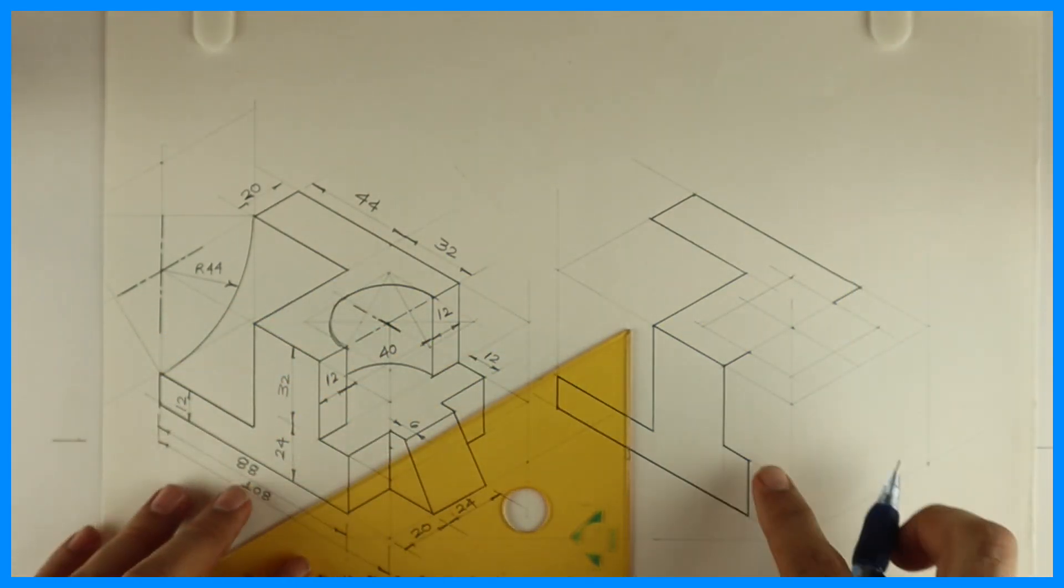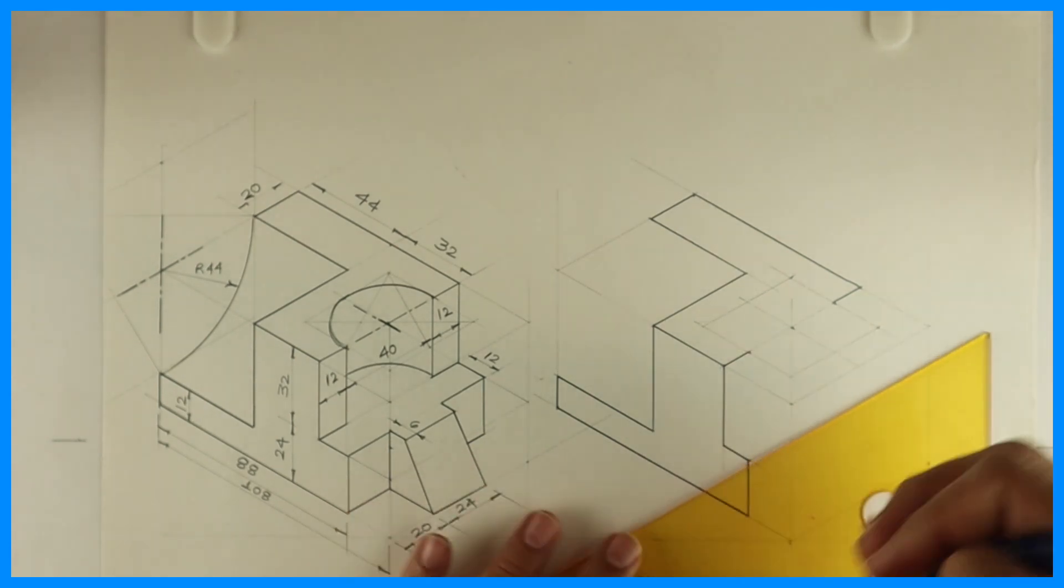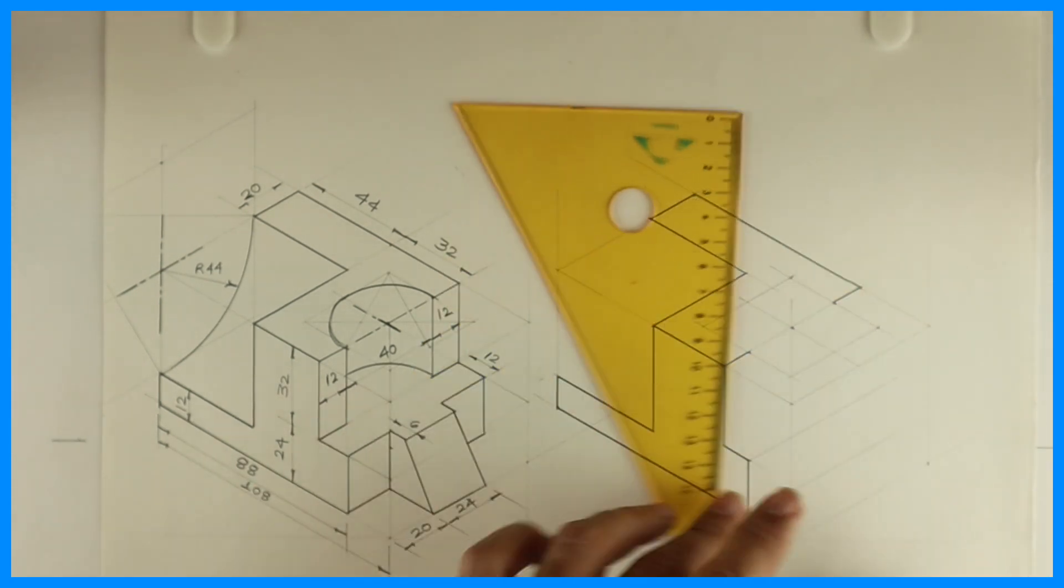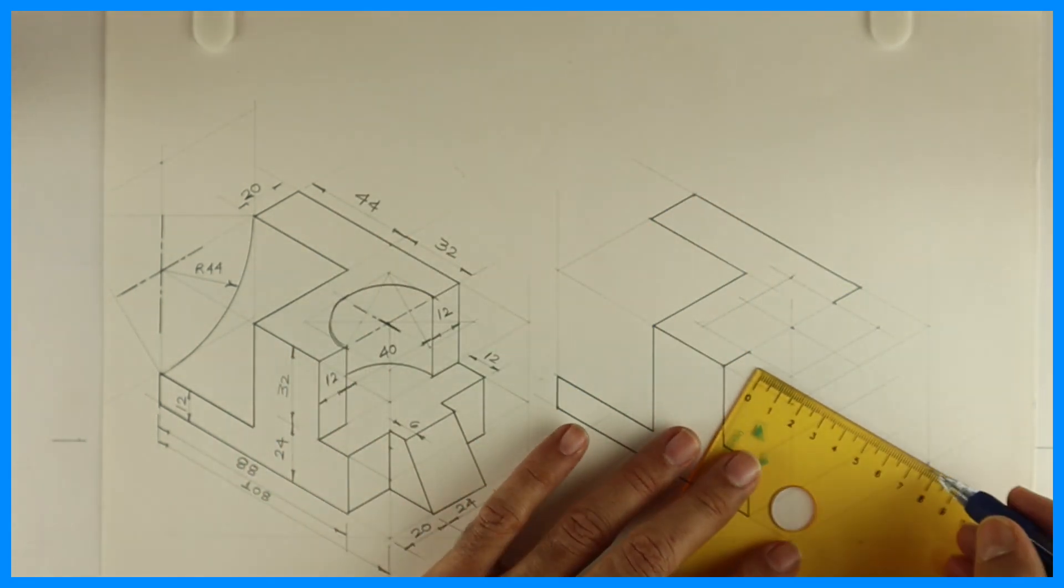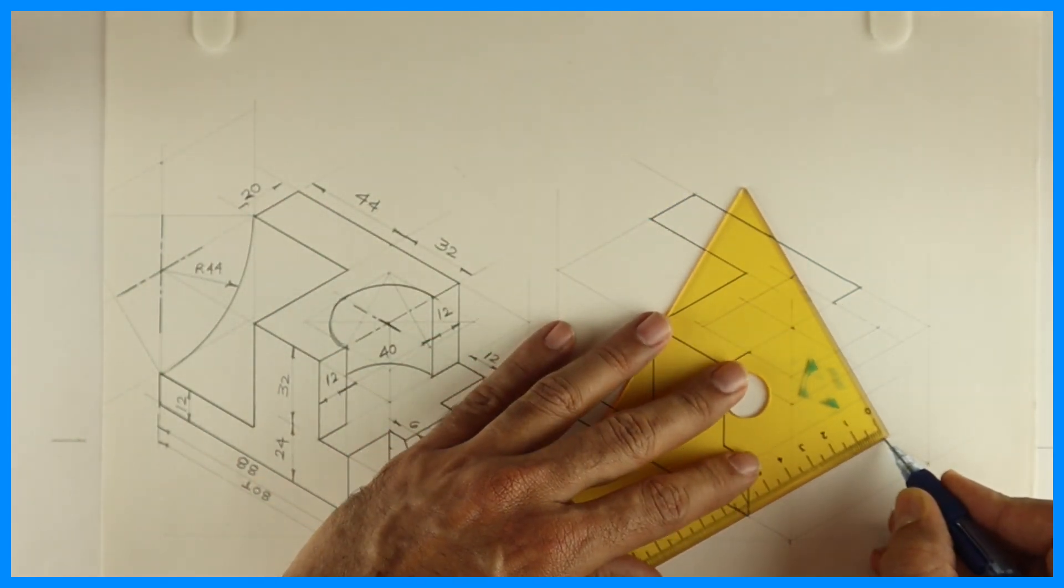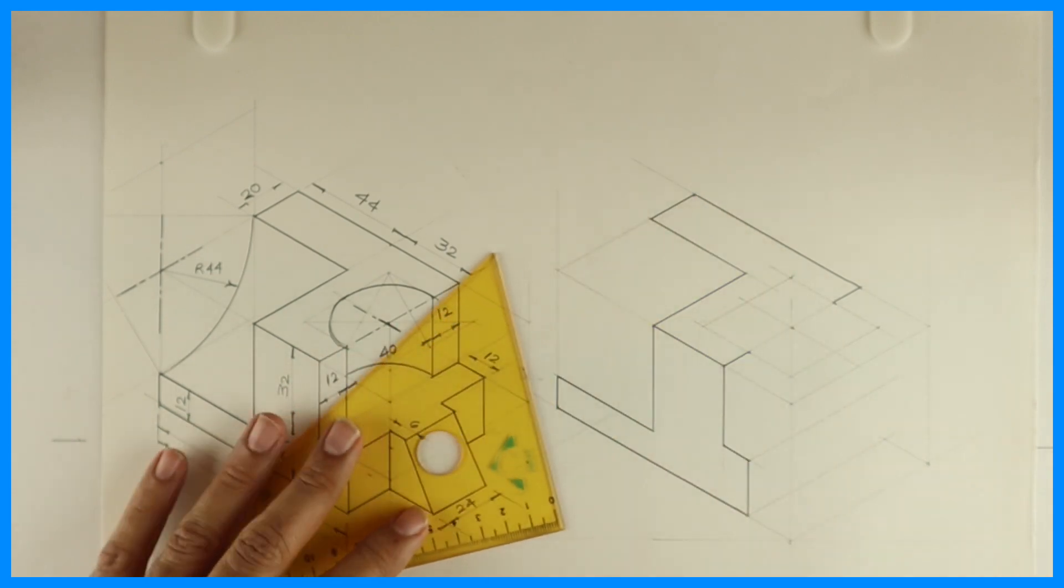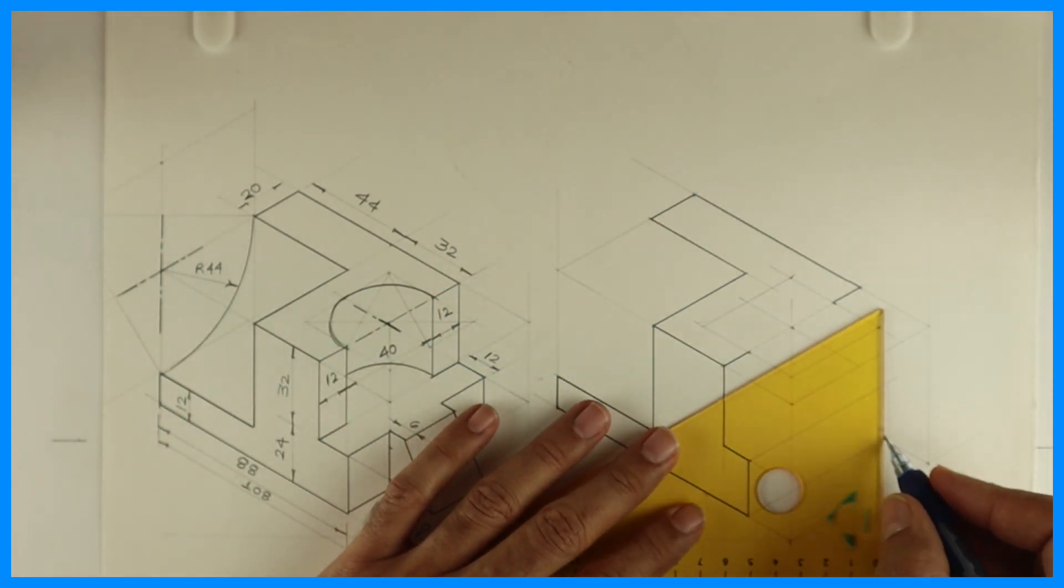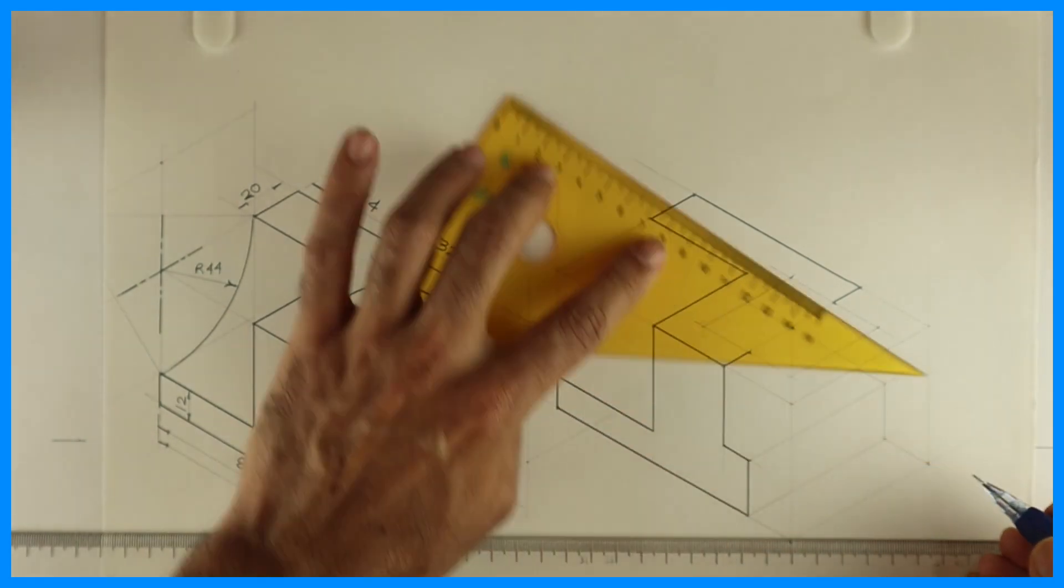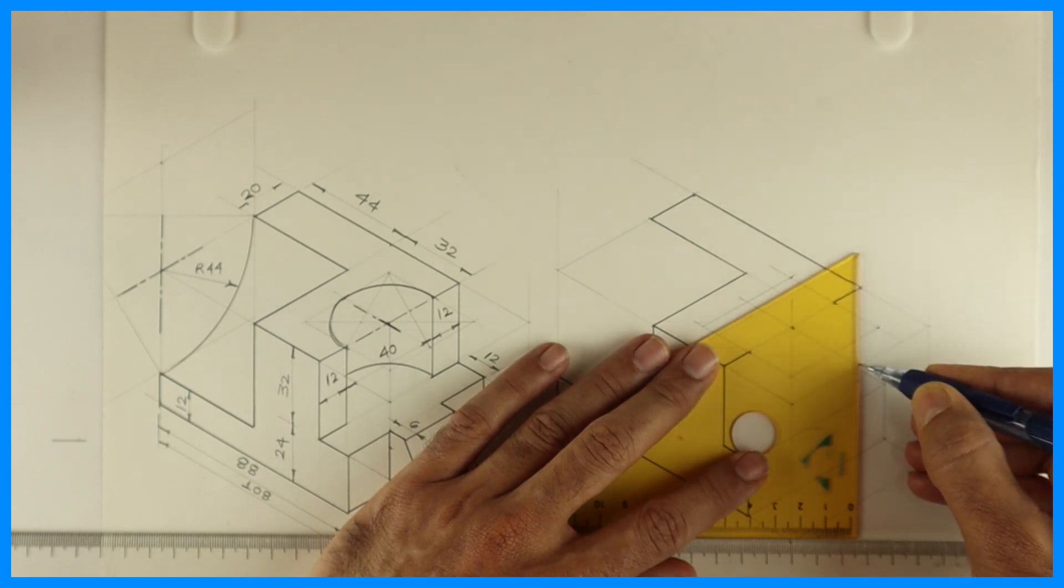So we got rhombus. After drawing this, we'll draw the lower part. How much is this? 64. So you go inside by 64, or you can go from here, it will be the same. Then you go up, you go inside by 12 and you draw vertical line.